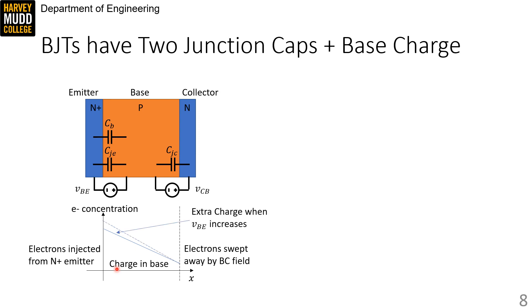So when we raise VBE to inject more electrons, this results in more total charge, a larger area, stored in the base. Here the dotted line is the concentration gradient with a higher VBE and the area between the dotted line and the original line is the additional charge that we had to shoot into the base to achieve that gradient.